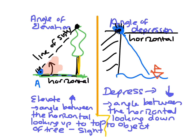If you're looking down to the object, there's the eyeball looking down to the object. But the angle starts at the horizontal and you're looking down. So the actual angle we're talking about is this one here. It's often mistaken for the angle underneath, but that angle is not from the horizontal looking down — so that one is not the angle of depression.